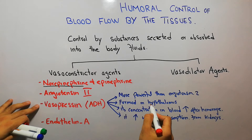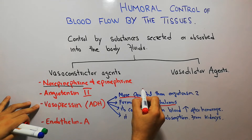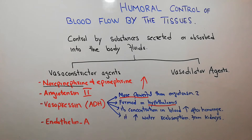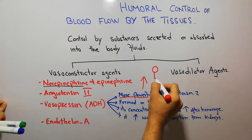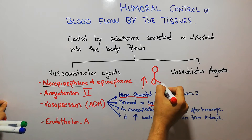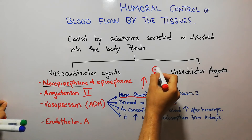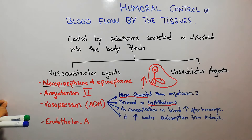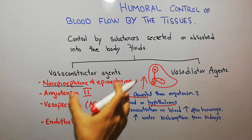Vasopressin is formed in the hypothalamus in the human brain. It is more powerful as a vasoconstrictor agent and can increase mean arterial pressure. From the hypothalamus it travels to the posterior pituitary gland — here we have the anterior pituitary, the posterior pituitary, and the hypothalamus in the brain. It is formed in the hypothalamus, comes to the posterior pituitary, and from there it goes into the blood.